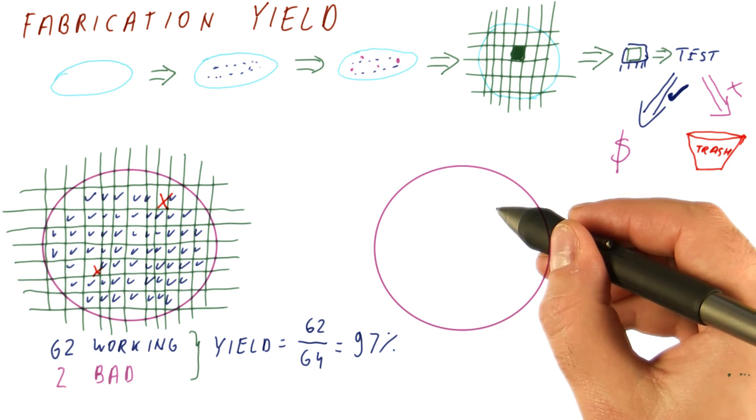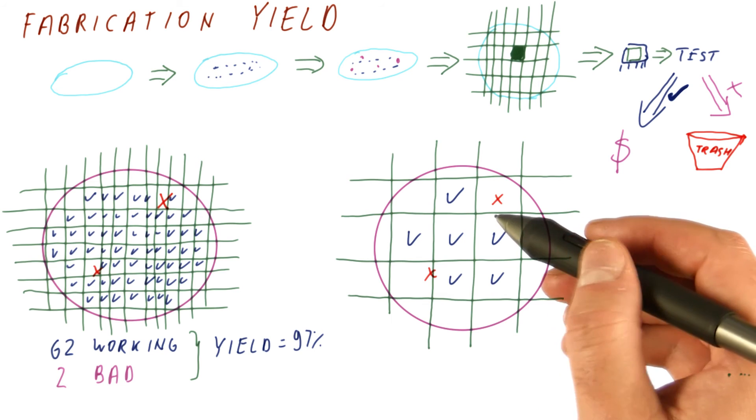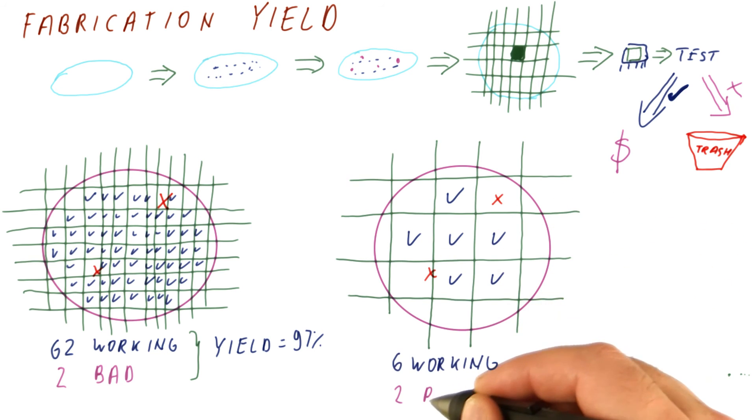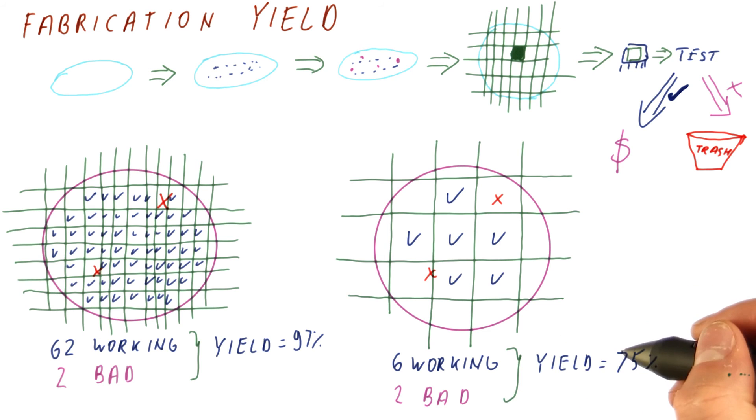Now let's start with the same wafer and the same defects, but now let's have much larger chips. Now we have six working and two bad chips, so our yield is only 75%.